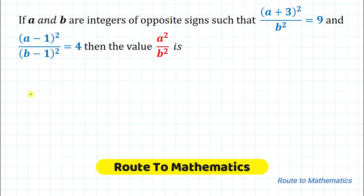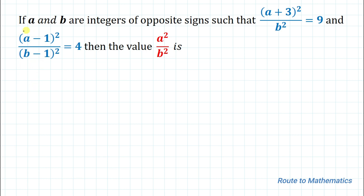Hello everyone, welcome to Root 2 Mathematics. In this video we are going to solve this interesting problem. The given problem is: if a and b are integers of opposite signs such that (a+3)² / b² = 9 and (a−1)² / (b−1)² = 4, then find the value of a² / b².